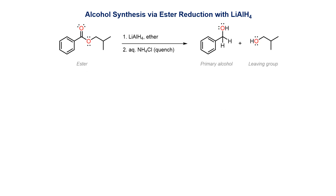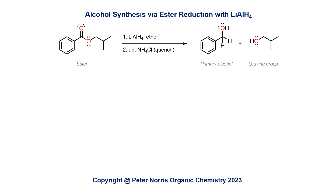When an ester is treated with lithium aluminium hydride, two equivalents of hydride are introduced. The first hydride attack leads to an aldehyde and alkoxide leaving group, and the second to give a primary alkoxide. Quenching the mixture with dilute acid provides the two alcohols that are isolated as the products of this process.